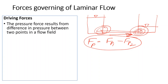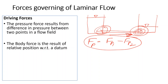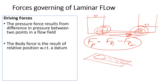Body force results from the relative position with respect to a datum. For example, if you drop liquid on an inclined plate, flow takes place downhill because one point is higher than the other. There is an imbalance of potential energy, and therefore the flow takes place toward the lower elevation. That is the meaning of body force or gravity force.